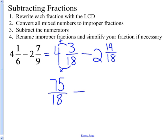I'm going to subtract that from 18 times 2 is 36, plus 14 is going to give me 50. So that's 50 over 18.